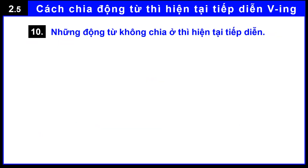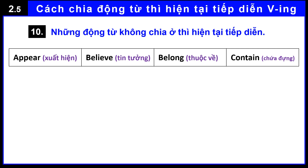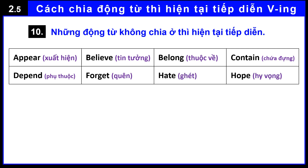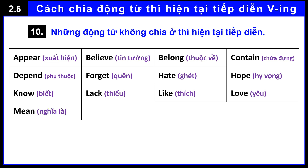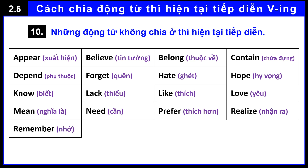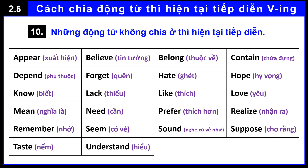Rule 10 — Verbs that are not conjugated in the present continuous tense: appear, believe, belong, contain, depend, forget, hate, hope, know, lack, like, love, mean, need, prefer, realize, remember, seem, sound, suppose, taste, understand, want, wish.